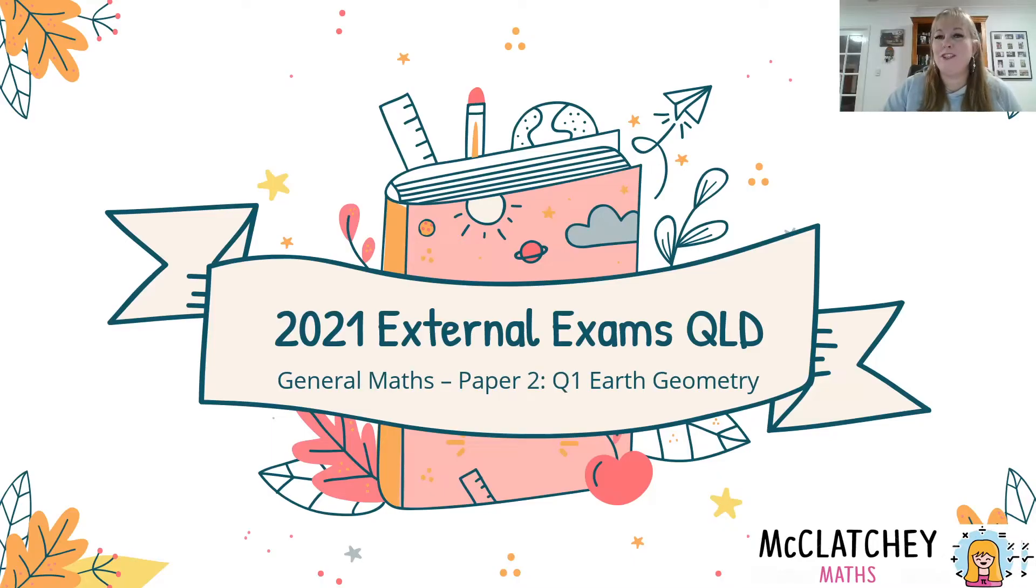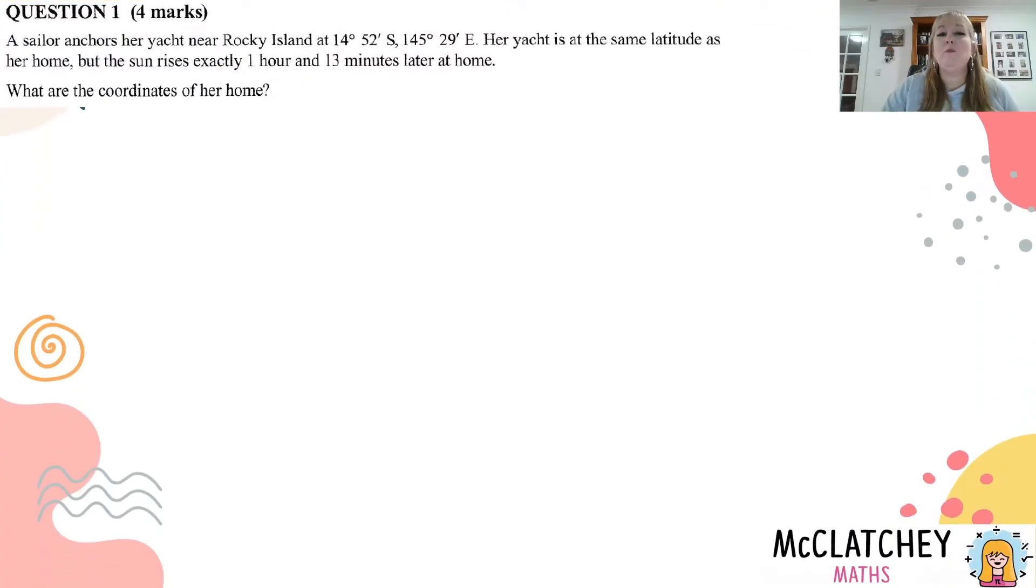So let's read the question. Question one is worth four marks. A sailor anchors her yacht near Rocky Island at 14°52'S, 145°29'E. Her yacht is at the same latitude as her home but the sun rises exactly one hour and 13 minutes later at home. What are the coordinates of her home?